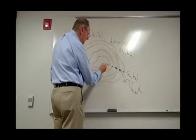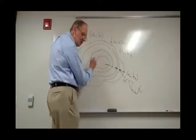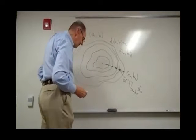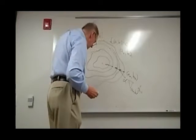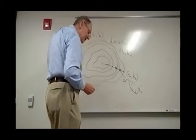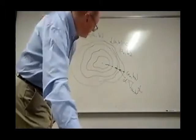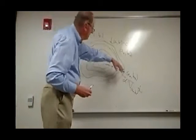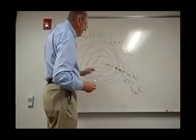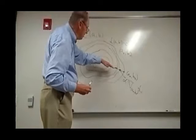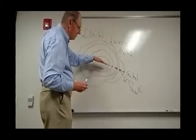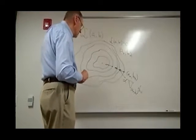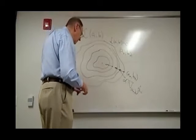At each step, I get closer and closer to the minimum. That's the idea behind gradient descent — you go along these level curves, stepping downward until you get closer and closer to the minimum value.